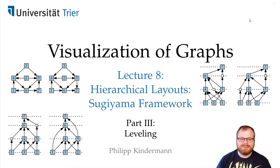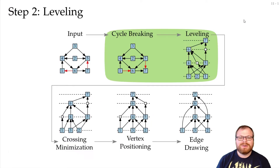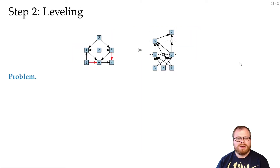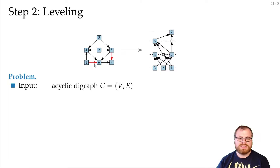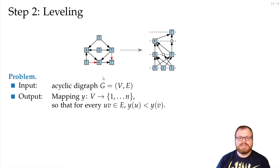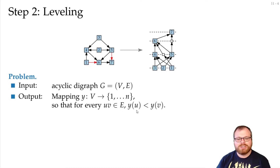In step two of the Sugiyama algorithm, we want to find a level assignment for our vertices. The input is an acyclic digraph from step one, and we want to compute for every vertex the y-coordinate — a mapping of the vertices to numbers between one and n, such that for every edge the y-coordinate of the source is smaller than the y-coordinate of the target.